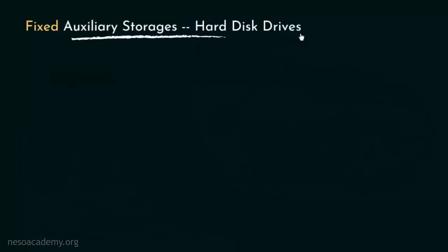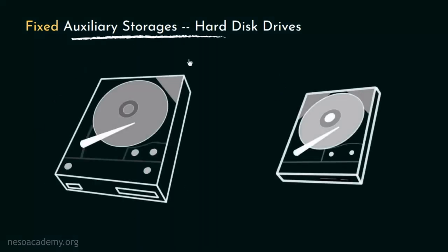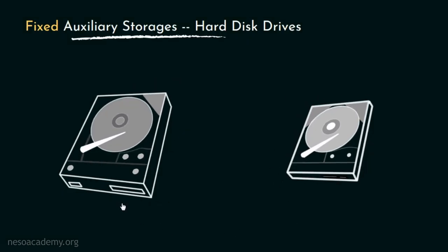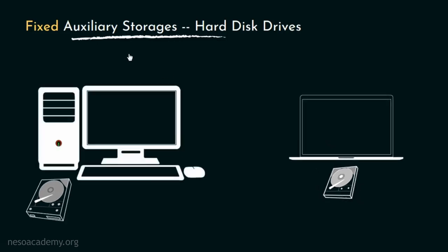Hard disk drives are available in two different form factors: the 3.5 inch one and the 2.5 inch variation. The 3.5 inch hard disks are specifically used in desktop workstations, whereas the 2.5 inch form factor is used with laptop computers.